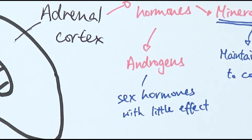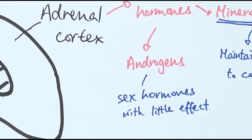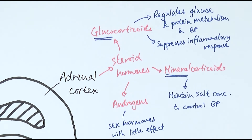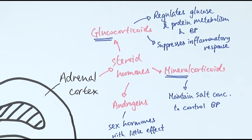The third type of steroid hormones that can be released is called androgens. These are sex hormones with very little effect on generally how the body works, though they may have a little more effect during menopause in women. To summarize: the adrenal cortex is the outer layer of the adrenal gland, releasing steroid hormones when stimulated by the pituitary gland — glucocorticoids (regulating glucose metabolism and suppressing inflammation), mineralocorticoids (maintaining salt concentration), and androgens (sex hormones with small effects).